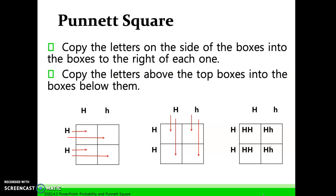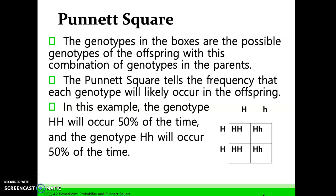When doing a Punnett square, you copy the letters on the side of the boxes into the boxes to the right of each letter, and copy the letters above the top boxes into the boxes below them. Each potential outcome must have two letters — one from each parent. Remember to keep uppercase letters first whenever writing a trait, as that establishes that the dominant trait is going to express itself. The genotypes in the boxes are the possible genotypes of the offspring. The Punnett square tells the frequency each genotype will likely occur in the offspring.